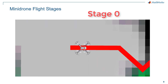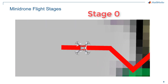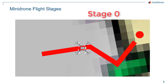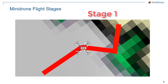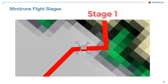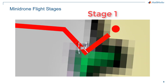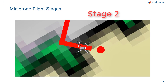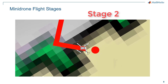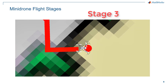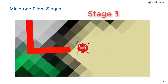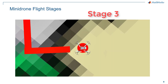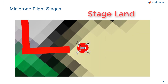Once the drone has completed its takeoff it's stage 0, then stage 1, section 2 complete is stage 2, then stage 3, then stage land, and once verified that it is on the circle, stage complete.